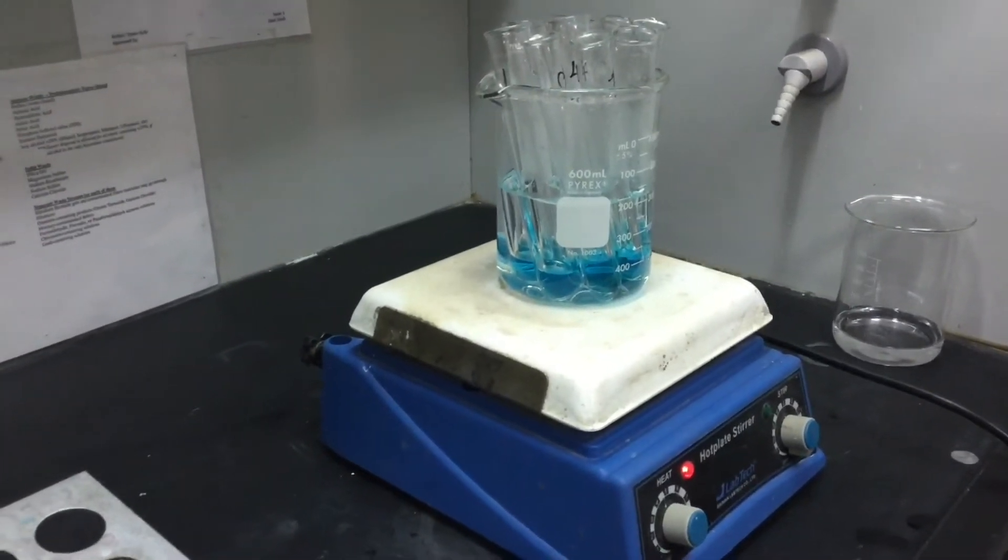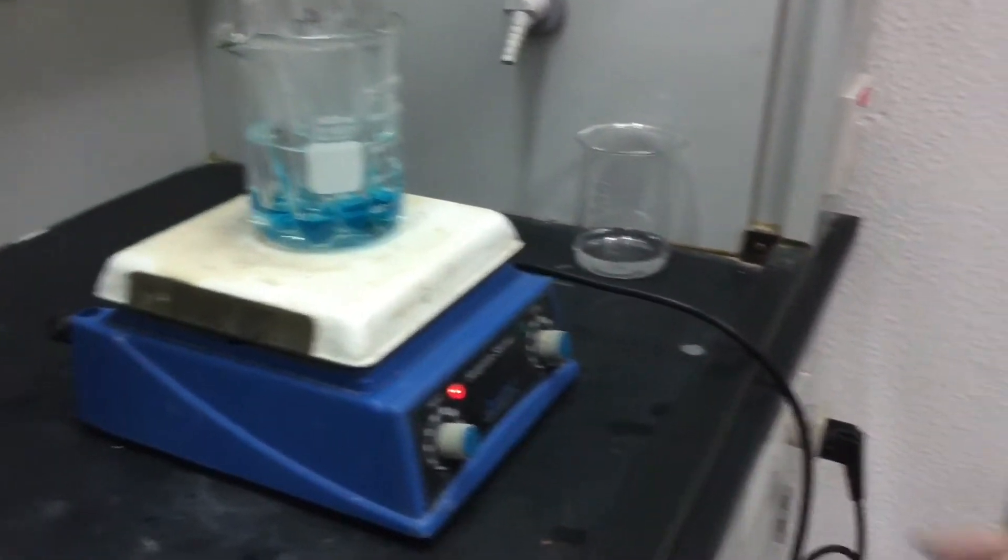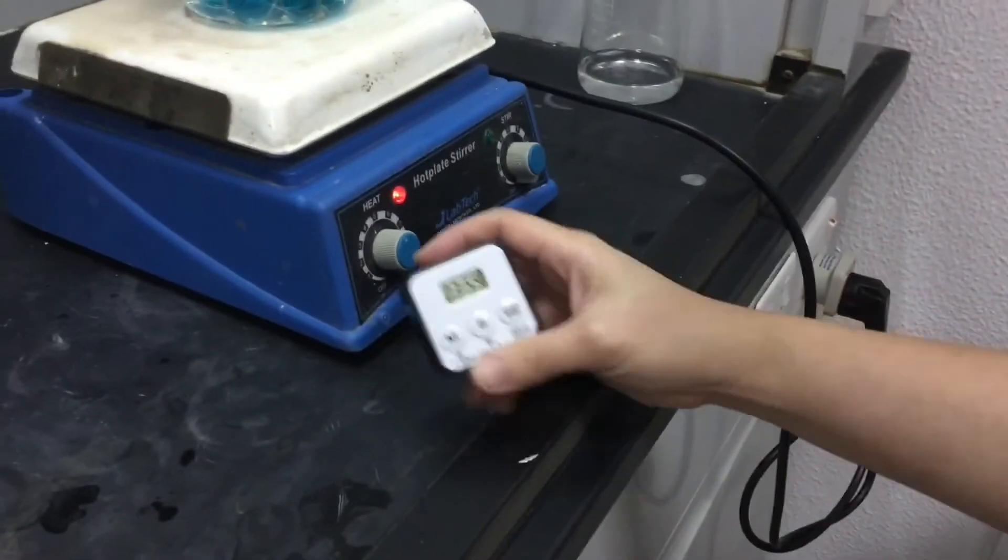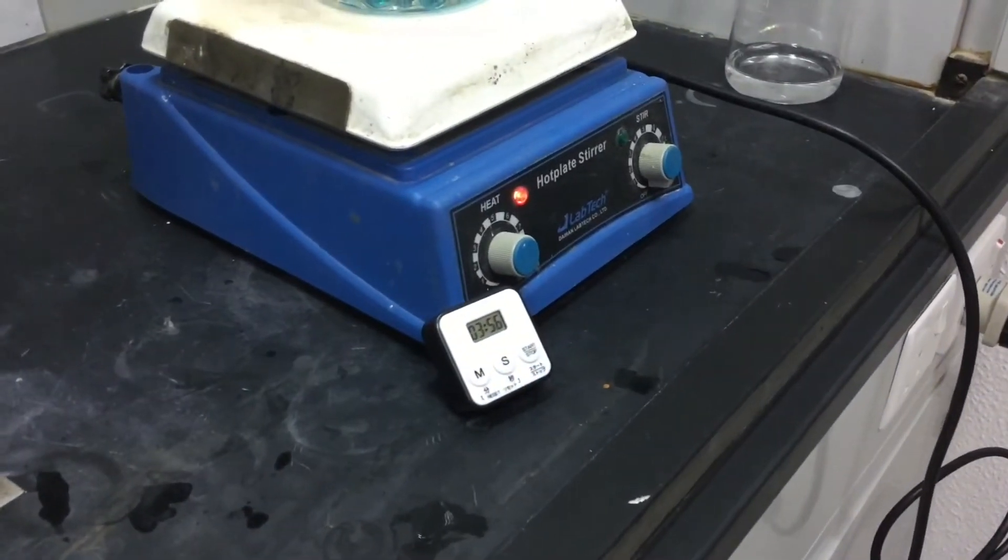After five minutes in a boiling water bath I remove the tubes, I allow them to cool and the fine precipitate that may have formed is then allowed to settle.